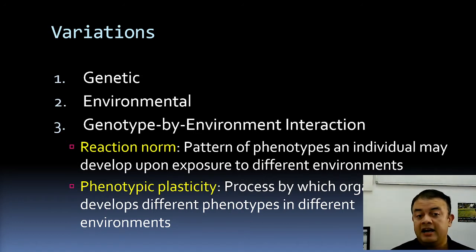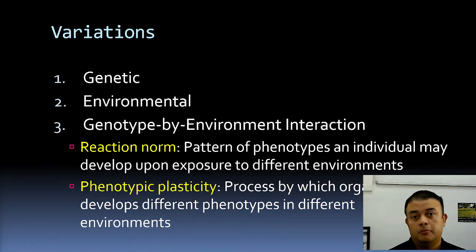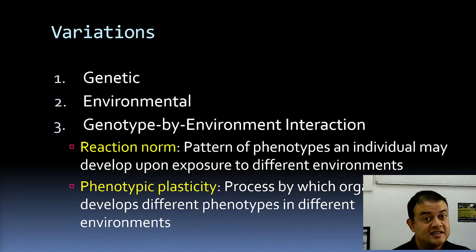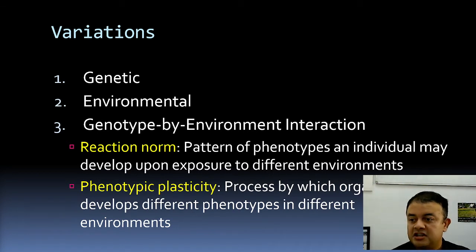Genotype is basically the combination of alleles an individual carries — whether both are recessive, both dominant, dominant and recessive, or co-dominant alleles. Alleles are different versions of the same gene. When we talk about genotype, there is also phenotype — the traits that an individual expresses morphologically. Whatever traits an individual expresses is called its phenotype versus genotype.